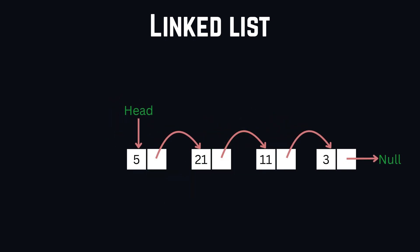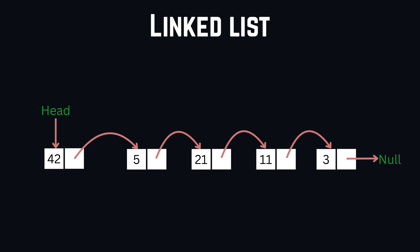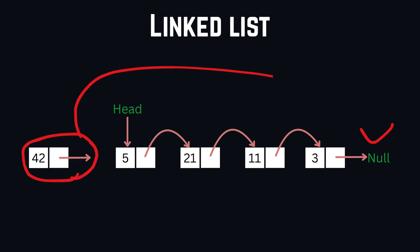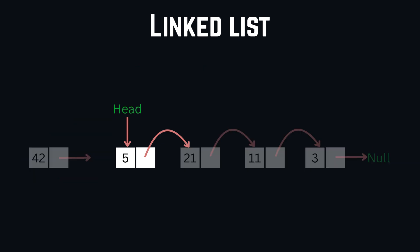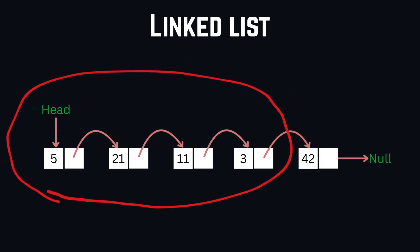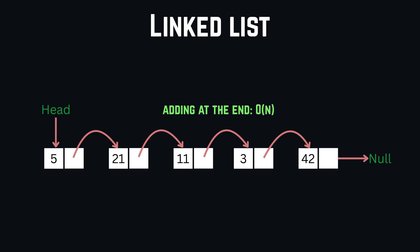When we want to add elements to the beginning of our list, we simply create a new node, point it to the current head, and then update the head to this newly created node. This whole operation only costs O(1) time because we're just changing a couple of pointers at the start. But if we want to add at the end of our list, we would need to iterate through the whole list to get to the end and point the last node's pointer to our new node, which costs O(N) time.